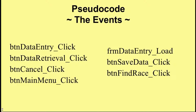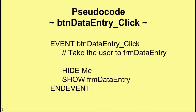Here's the button data entry click event. Notice that we're starting with 'event', and button data entry click is the name. The first line with the two slashes is a comment telling us what this event is doing. That's useful for others who follow on — that sort of thinking is the professional approach. Amateurs leave comments out; professionals see comments as absolutely necessary. This event will take the user to the form data entry.